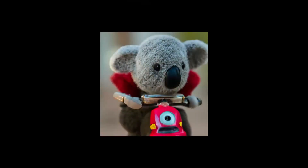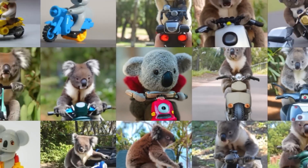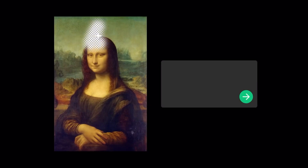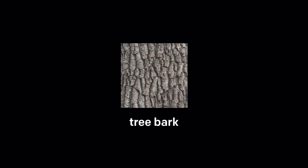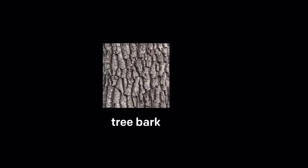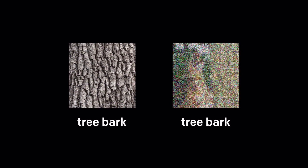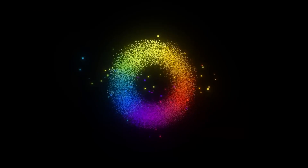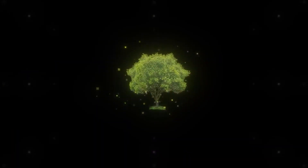Furthermore, OpenAI has designed DALL-E 3 to decline requests that ask for an image in the style of a living artist, a move to respect the rights and creativity of other artists and prevent the misuse of AI-generated art. However, it's crucial to recognize that these steps, while important, do not fully address the complex web of ethical and legal issues surrounding AI image generation.